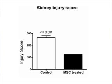The next question the investigators looked at was: serum creatinine is a functional marker, but what does the kidney actually look like? So they performed what's called an injury score, asking their pathologist to quantify the kidney damage. As you can see in the figure, the kidney injury score is significantly lower in the rats that received the mesenchymal stem cells.